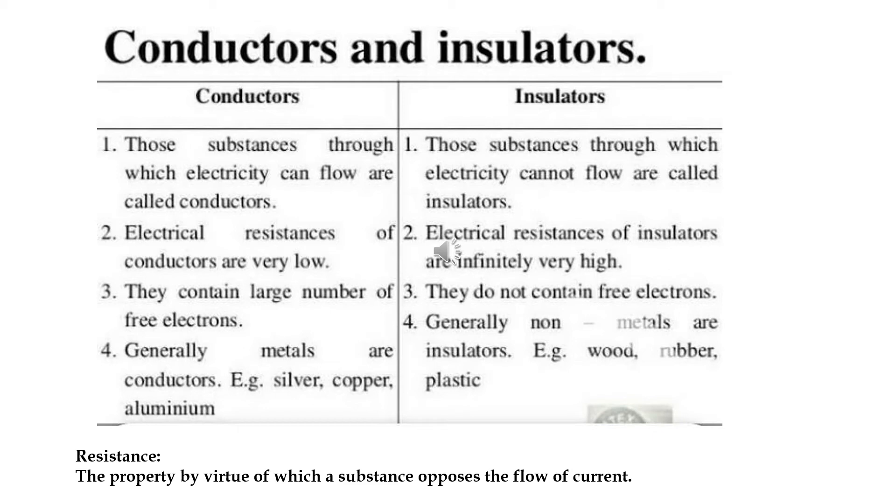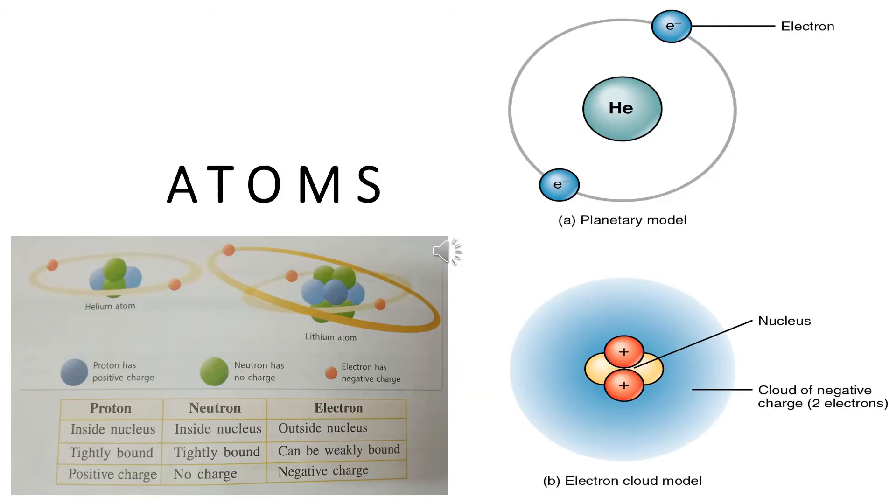Usually, metals are conductors like silver, copper, aluminum. Whereas, the non-metals are insulators: wood, rubber, and plastic. These are the basic important points between the conductor and insulator. And to get a better idea about the electric current, we must understand the basic behind that.